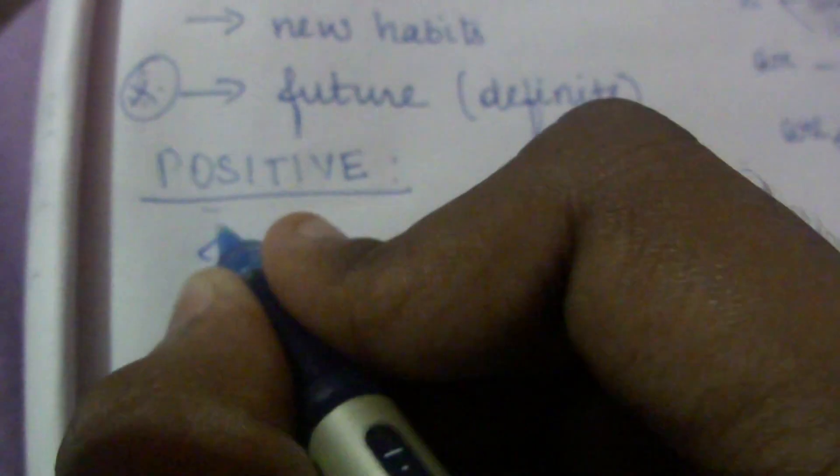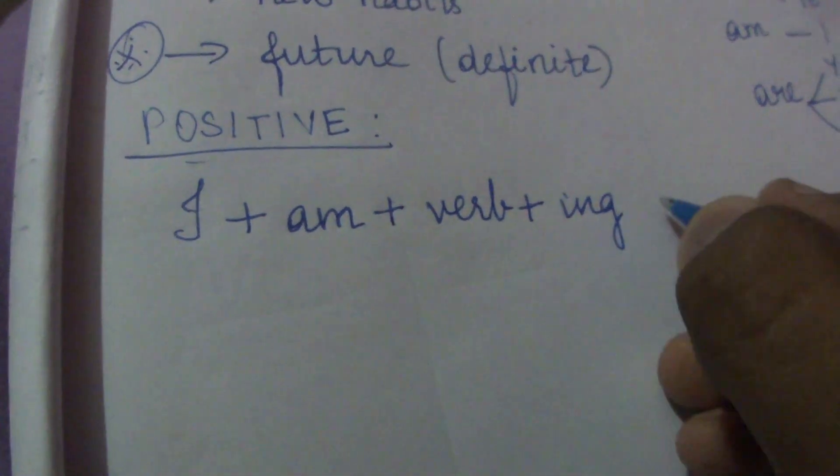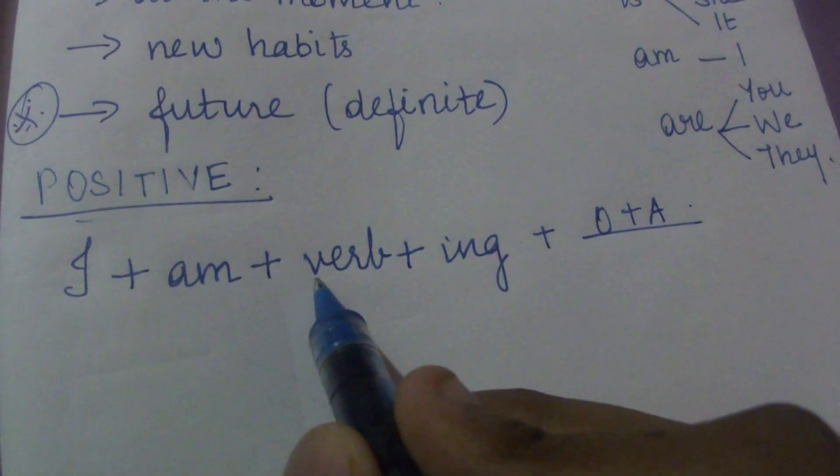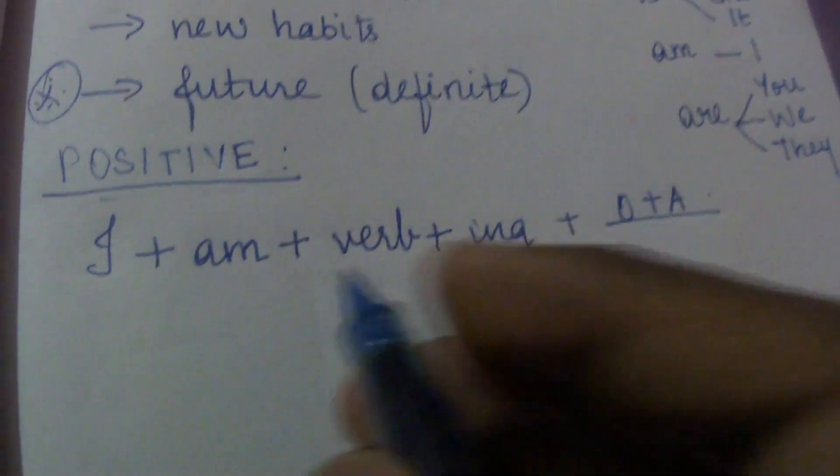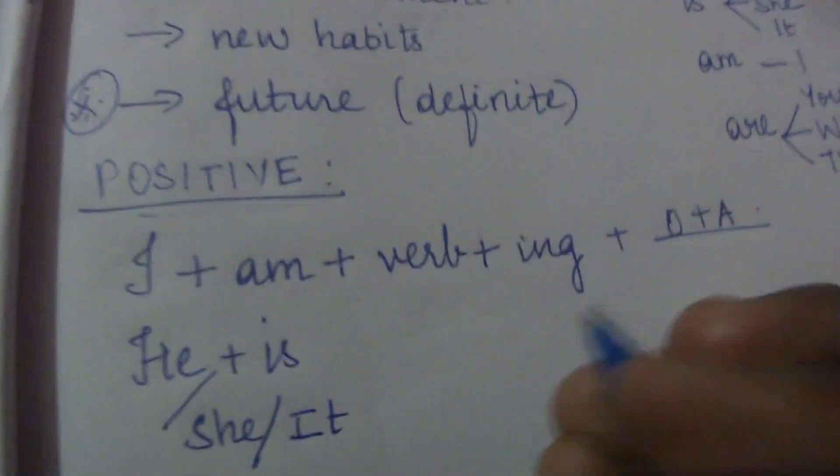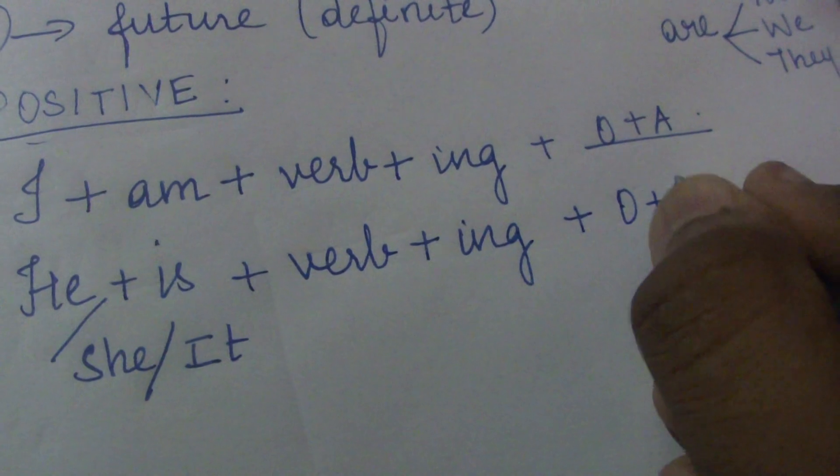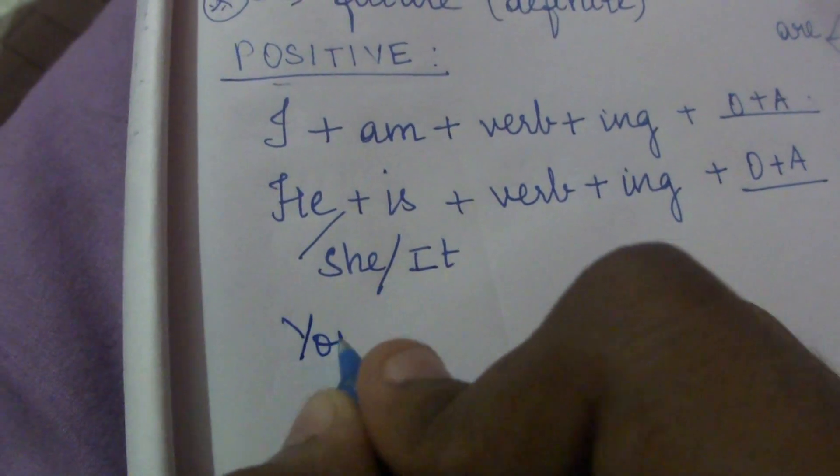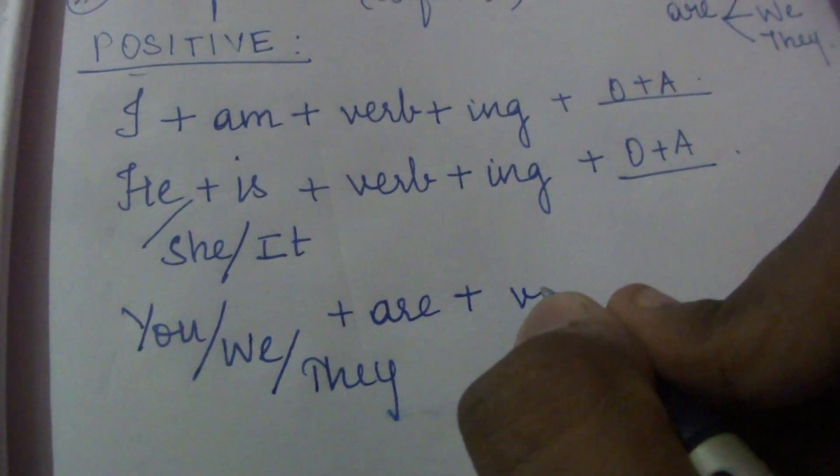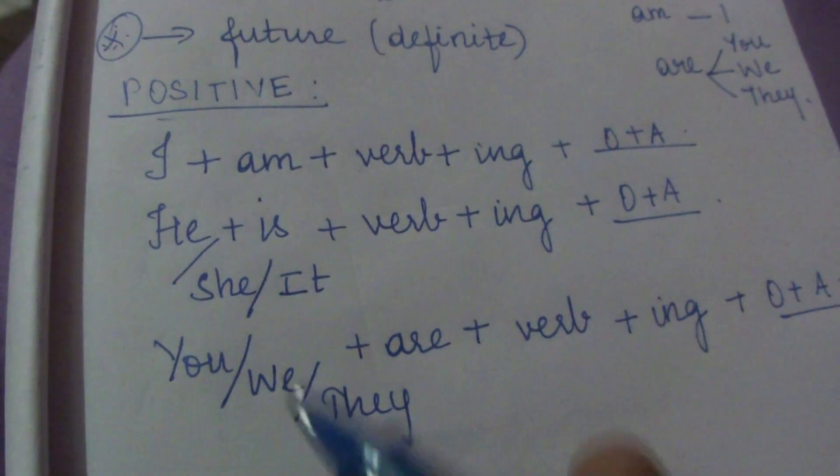Here if we see positive, if it's I, then I have to write it as I am, then the verb plus ing, plus the remaining part of the sentence like object or if adjunct is present adjunct. I am plus verb. For example, I am writing a letter. And if it is he or she or it is, he or she or it is plus verb plus ing plus object or adjunct if it is present. And if it is you, we, they plus are plus verb plus ing plus o plus a. These are the positive forms of present continuous tense.